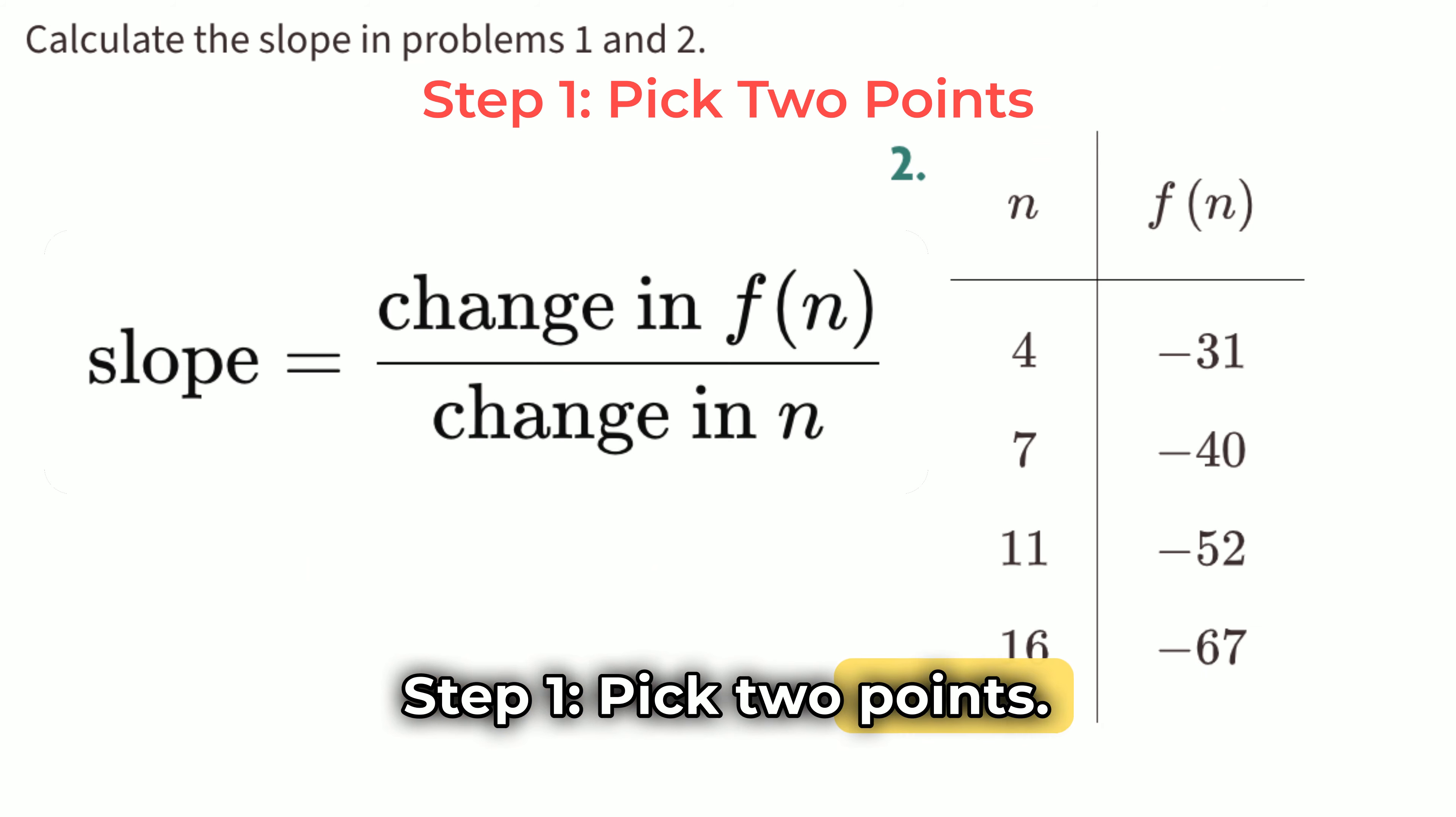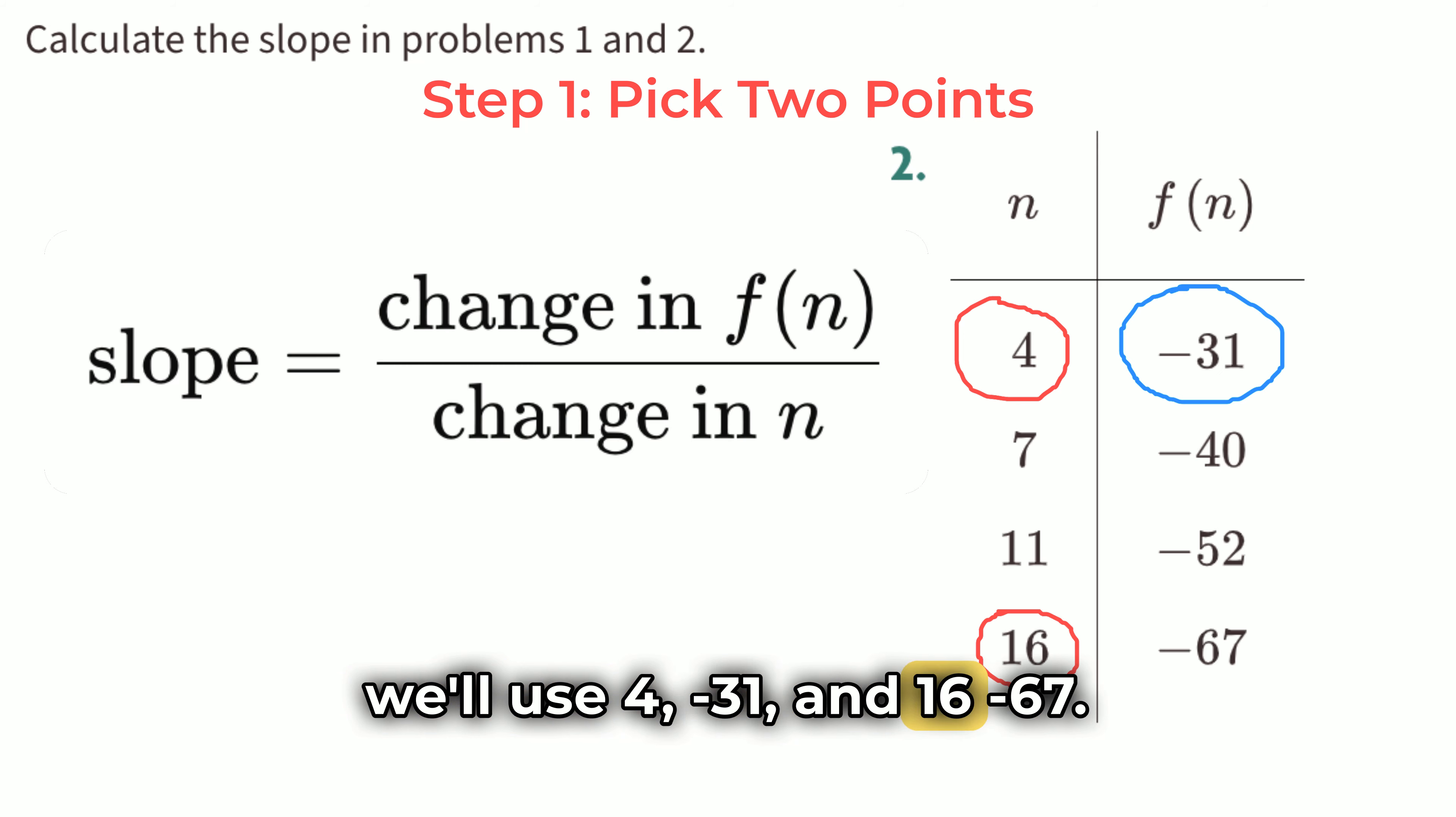Step 1. Pick two points. Let's pick two points from the table to calculate the slope. We'll use 4, negative 31, and 16, negative 67.